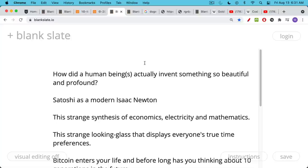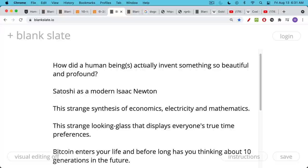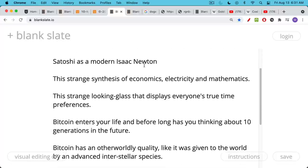It's a very strange and beautiful synthesis. Bitcoin itself is also like a mirror. It's a strange looking glass that when you look into it, it displays or reflects back your true time preferences. Bitcoin enters your life, and before long, if you go deep enough, it has you thinking about 10 generations in the future.